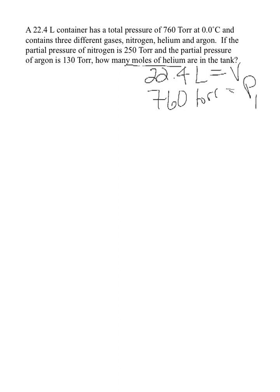And we have a temperature, 0.0 degrees Celsius, so we have a temperature. We also have the partial pressure of the nitrogen, so the partial pressure of the nitrogen is 250 torr. And we have the partial pressure of the argon, which is 130 torr.